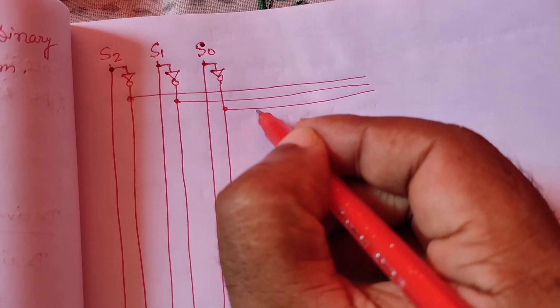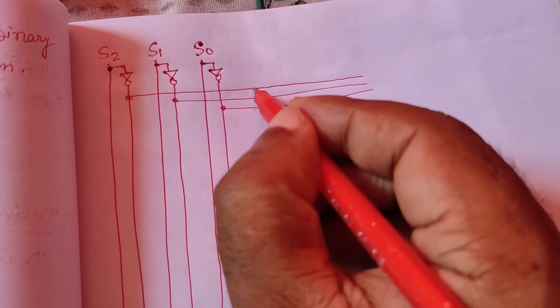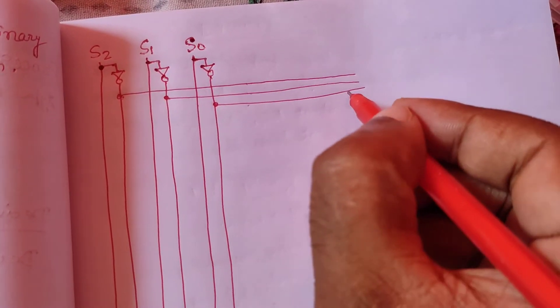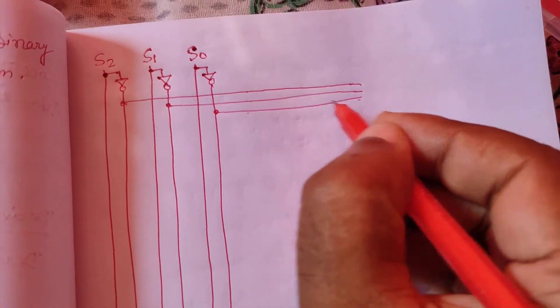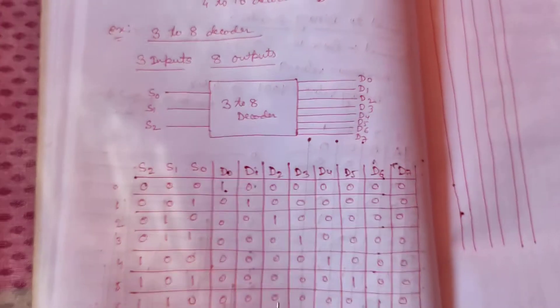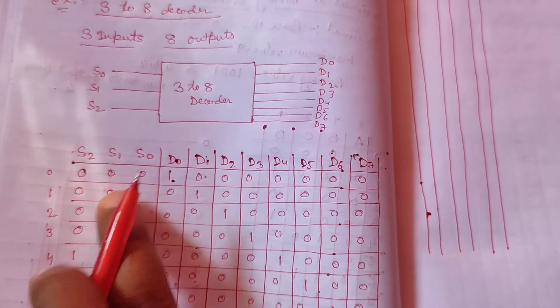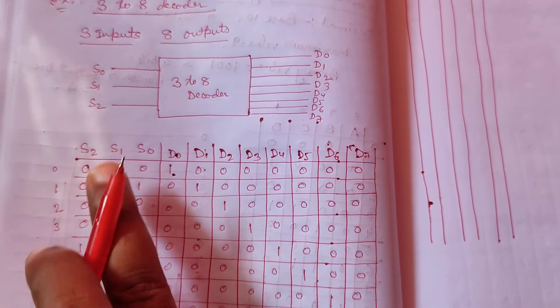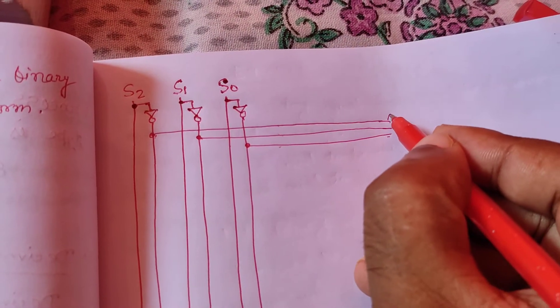So the inputs are S0, S1, S2 — or their complements S0', S1', S2'. Since we are taking row-wise, it will be multiplication — that is, an AND gate. So D0 is implemented using an AND gate.